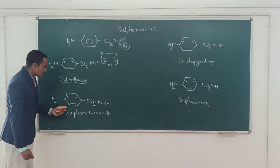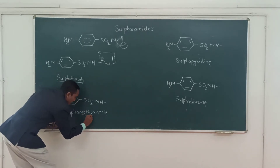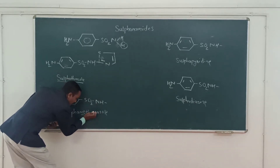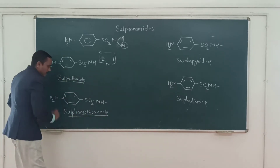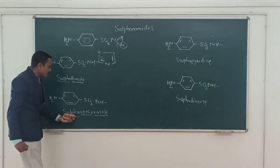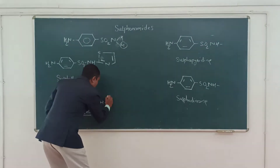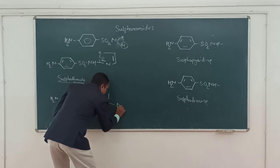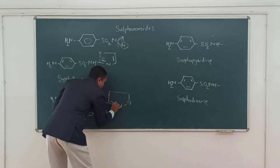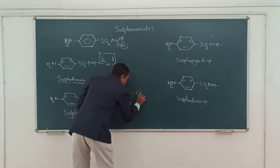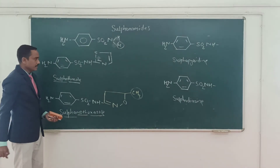Next is sulfamethoxazole. Here you can see the 'methoxazole' part — a methyl group is there and an oxygen is there. Sulfa is there, and oxazole. So we have to substitute here; the oxazole will carry the methyl group. So here you can see this is the methoxazole and this is the oxazole, combined with sulfonamide.